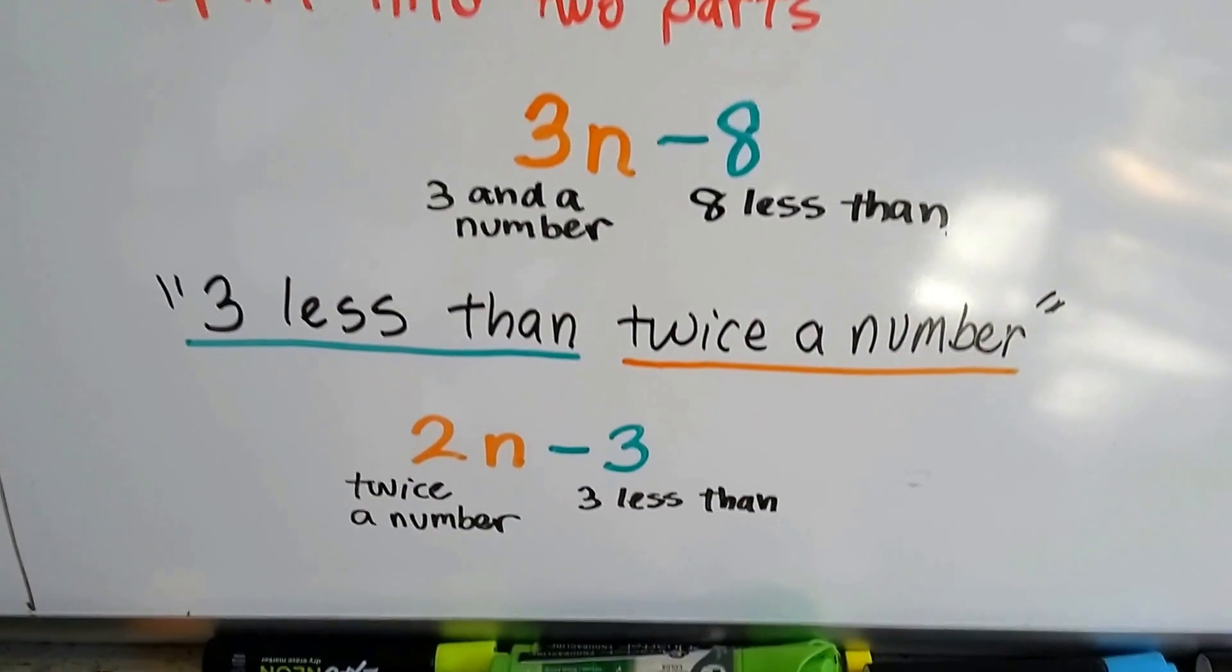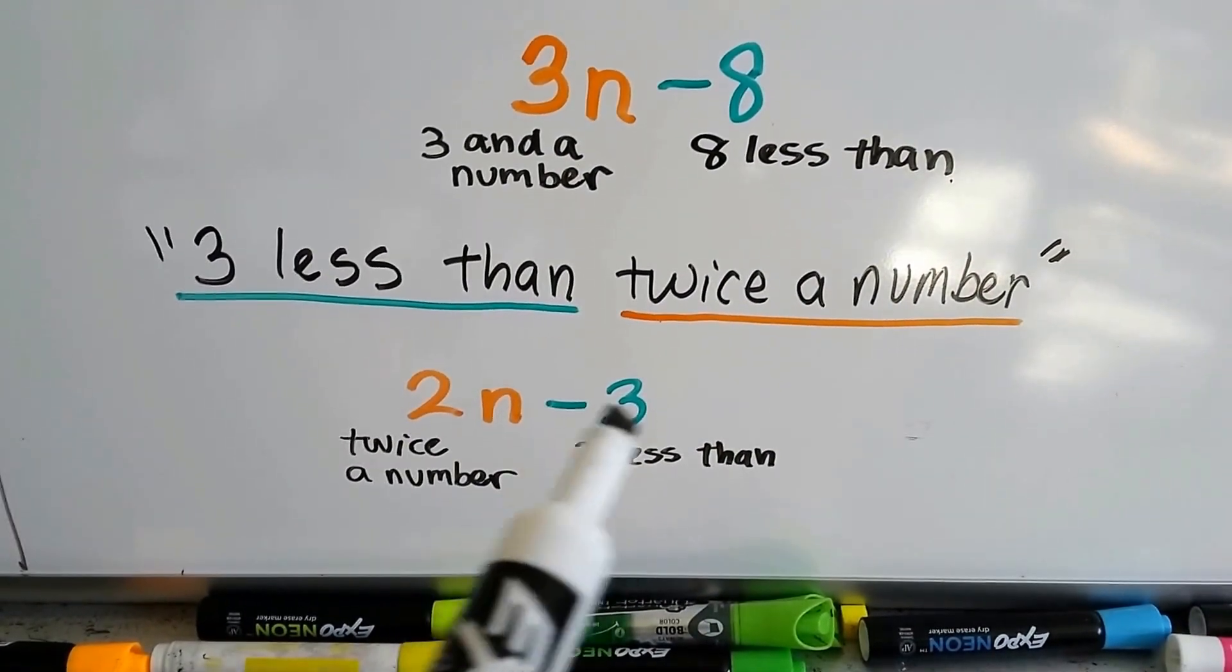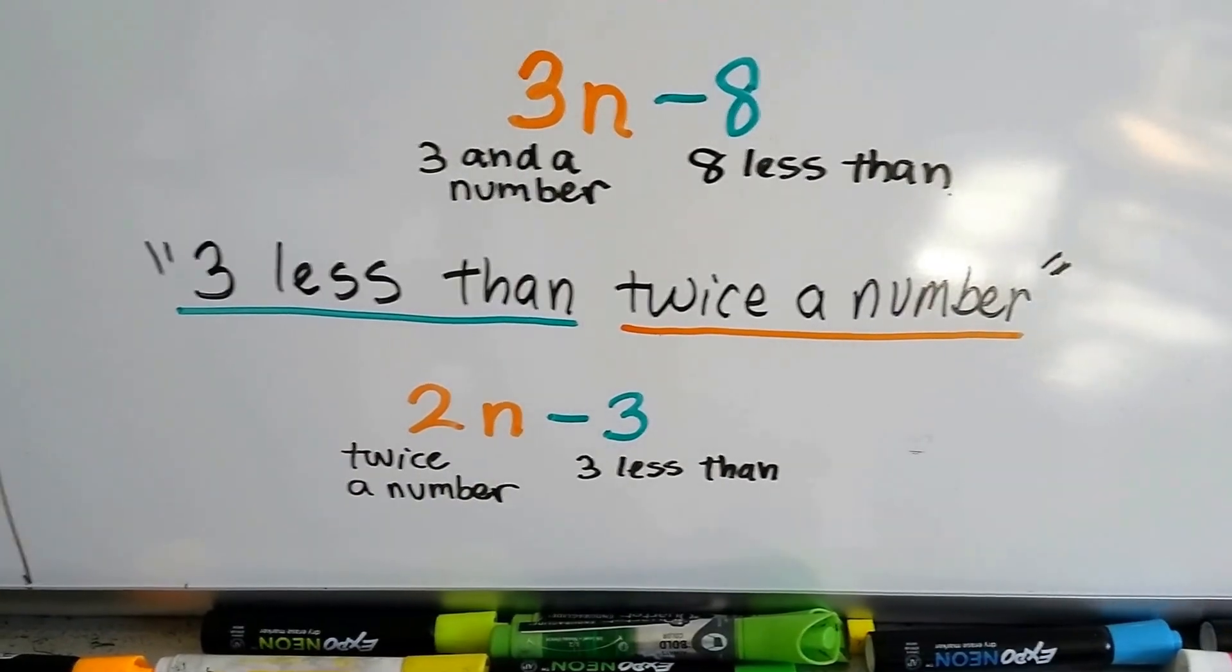What if we have three less than twice a number? Here's the three less, minus three, and twice the number would be two n. So we have two n minus three. Let's try another one.